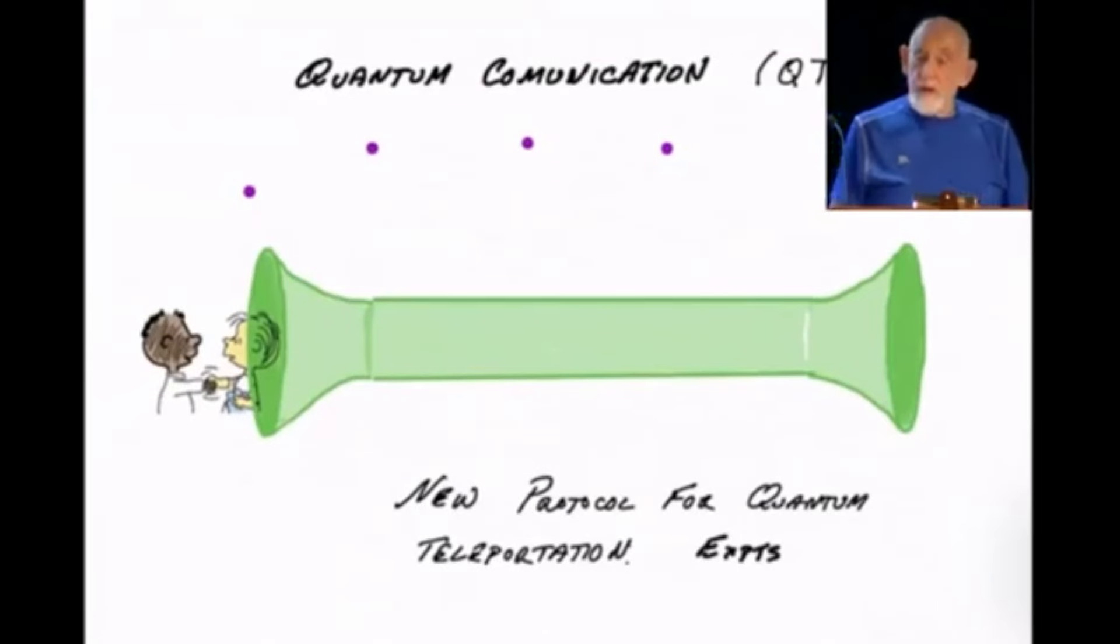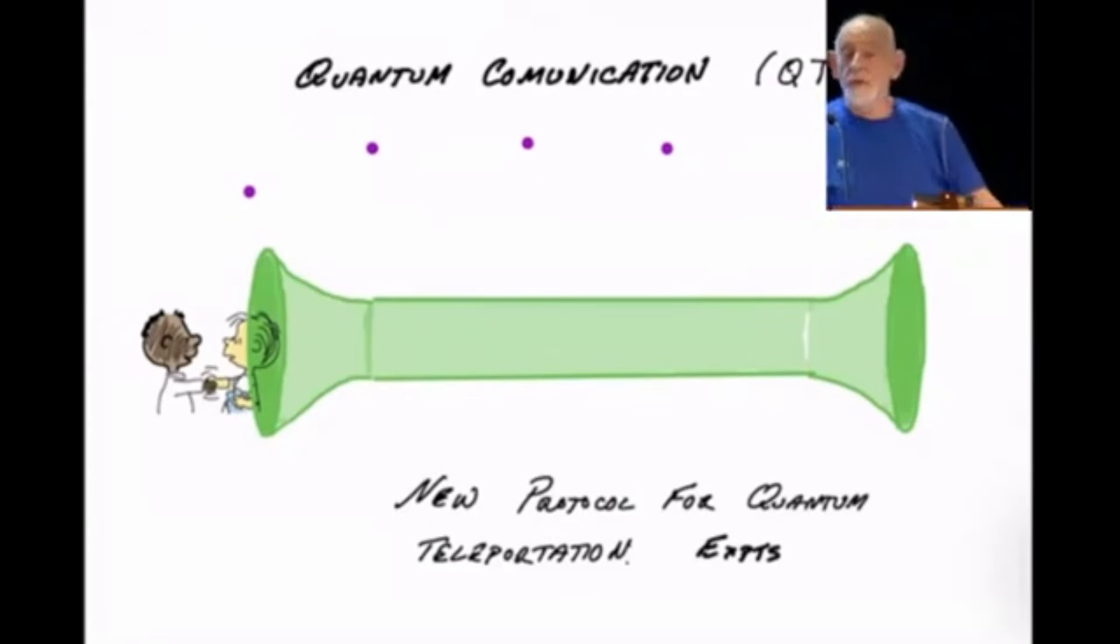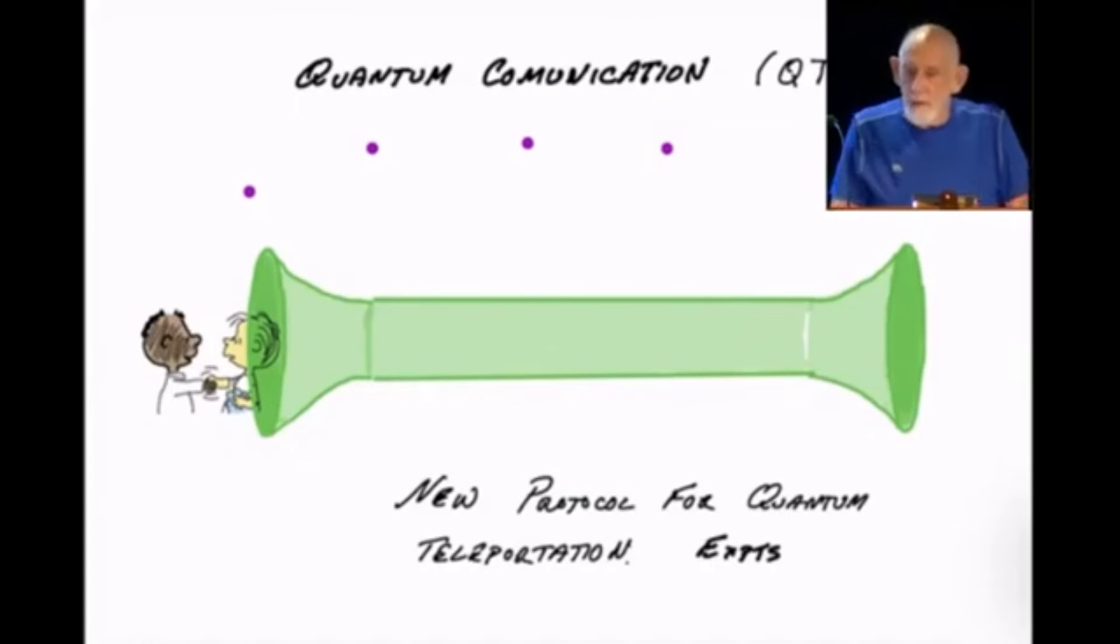I told you that Linus cannot get through the wormhole. Well, I was a little bit too pessimistic. With a little bit of help from something called classical, the exchange of classical information. These little purple dots being sent from one side to the other. That's just ordinary Morse code, for example, but has no information about it, about Linus or about anything else inside the wormhole. With a little bit of help from a little bit of classical information, you can slow down that growth of the wormhole. You can slow it down enough so that indeed, Linus can get through it.